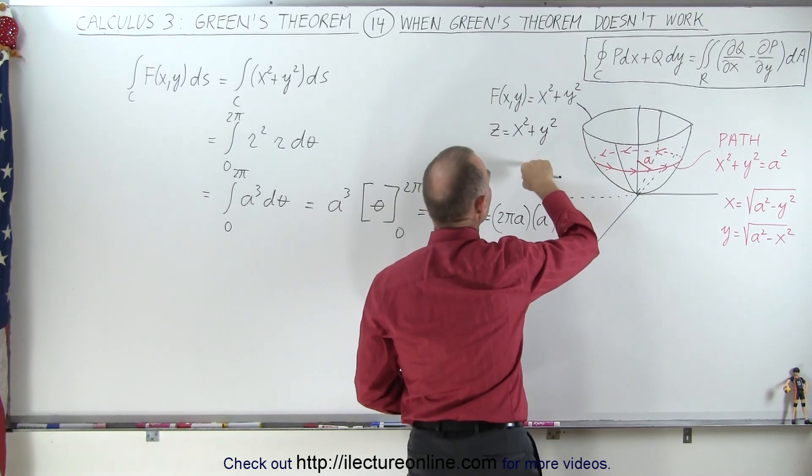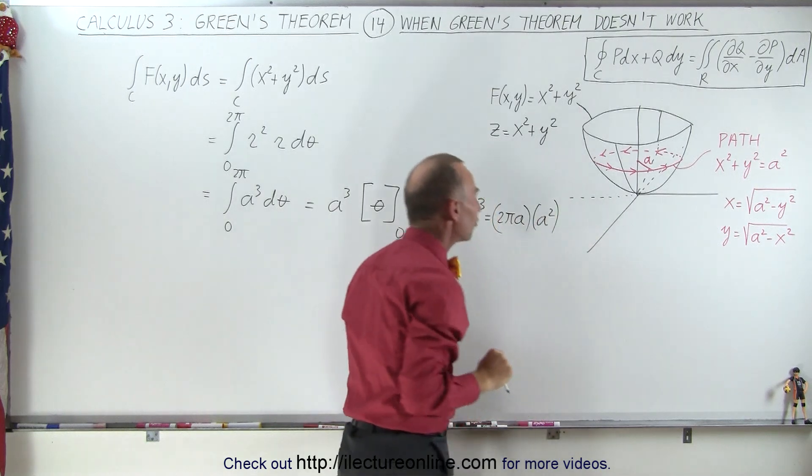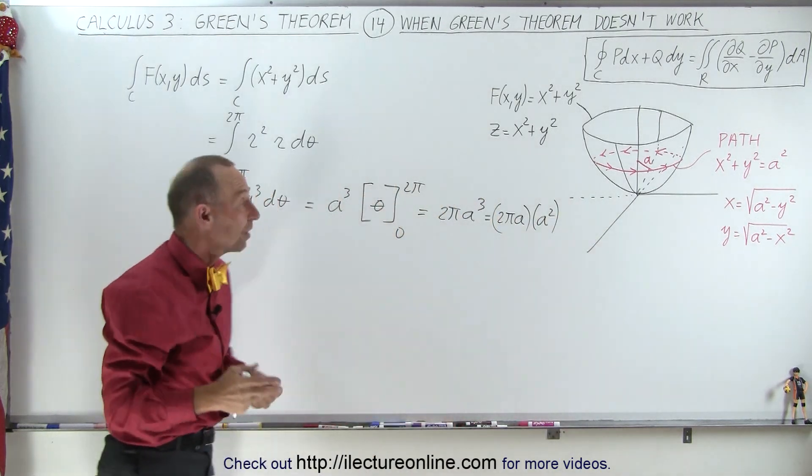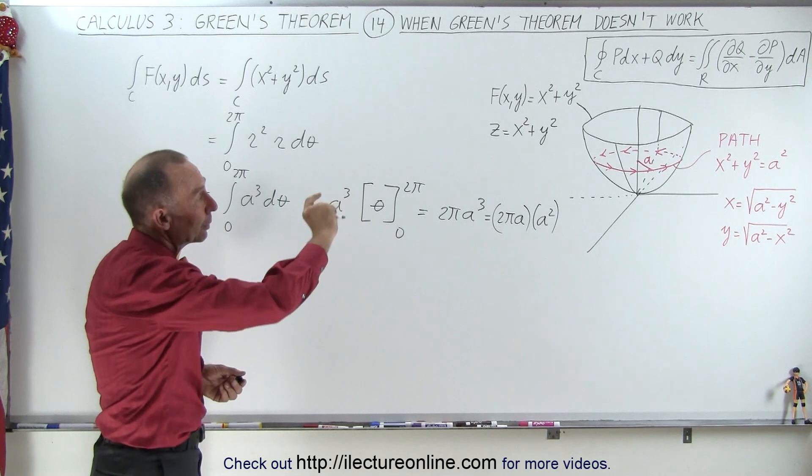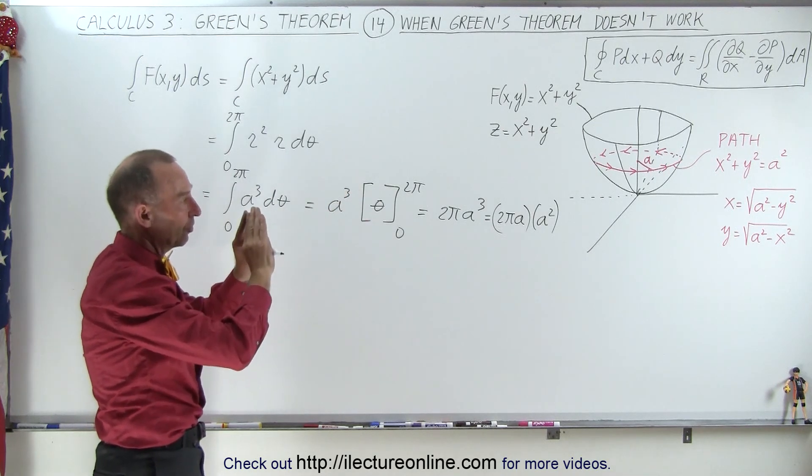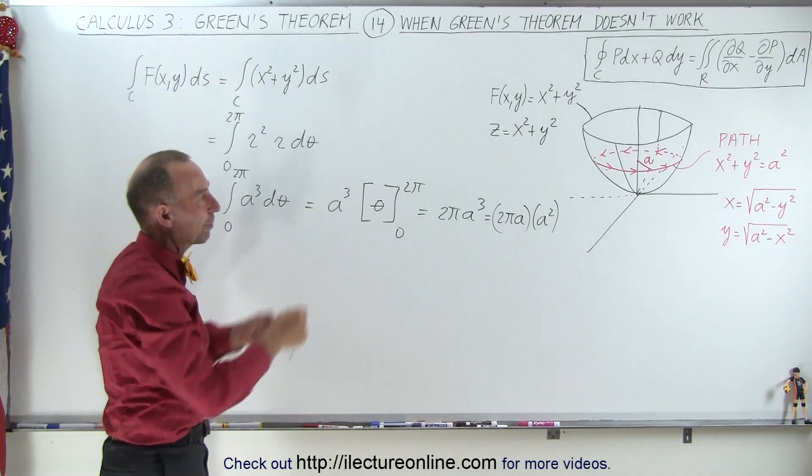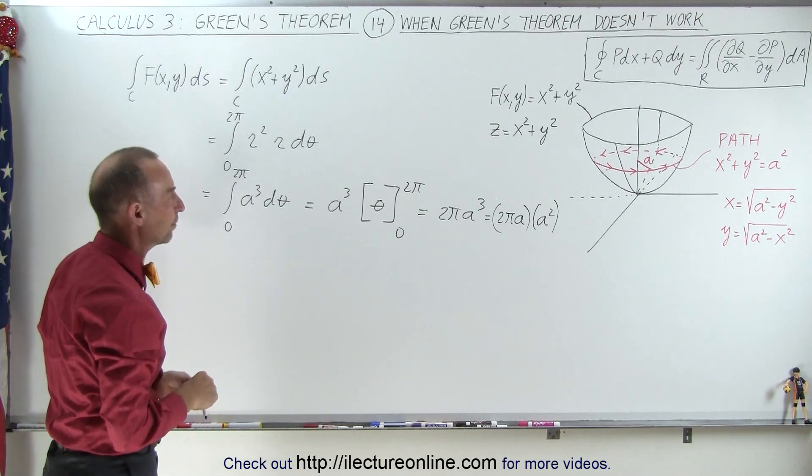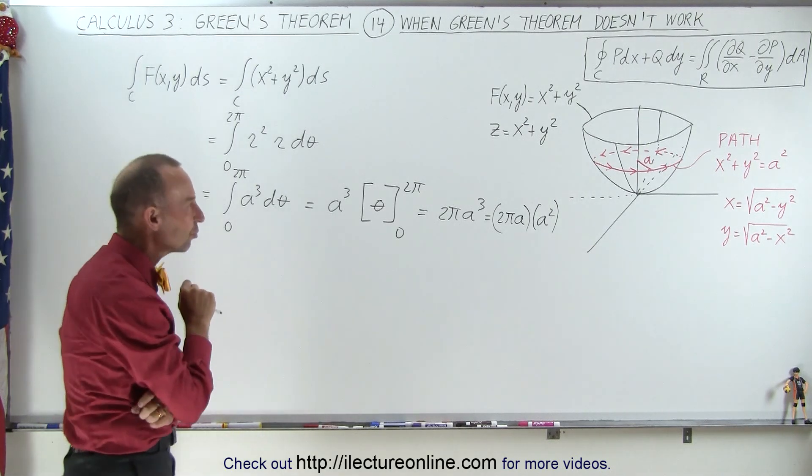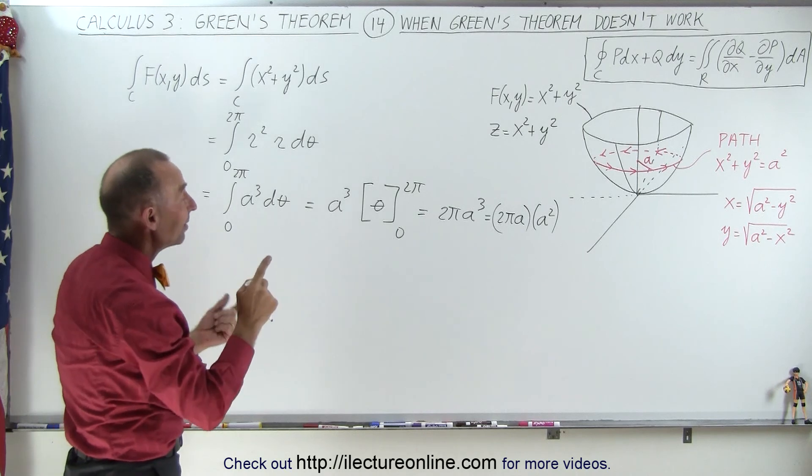Because the height is equal to x squared plus y squared, and so therefore the height can also be expressed as a squared. So that really represents physically the area of the curtain hanging down from that path of integration. Now why can't we use Green's theorem to solve this problem?